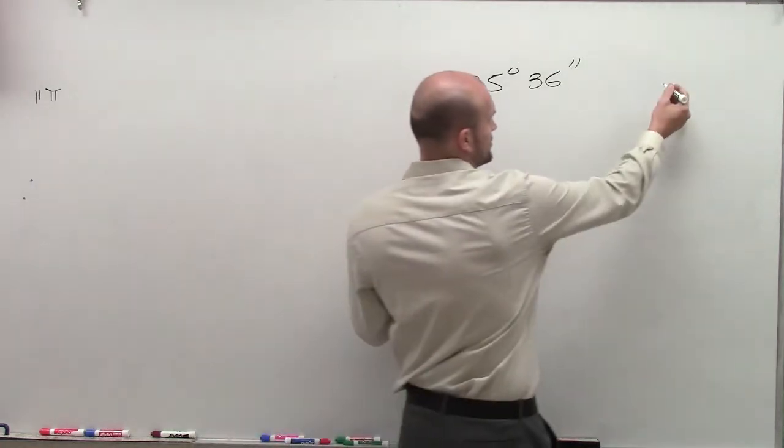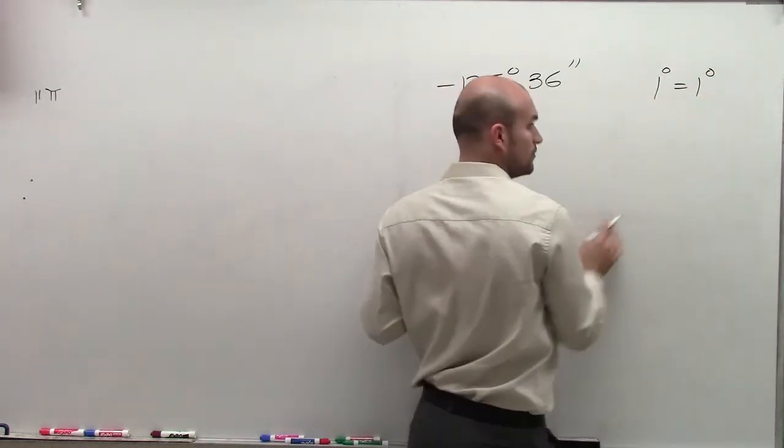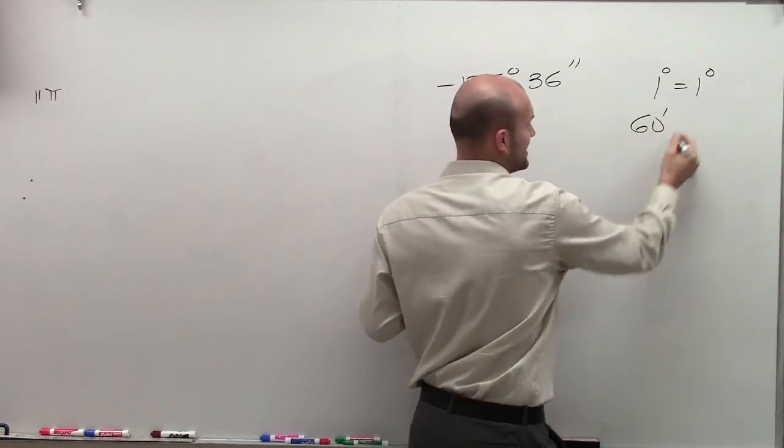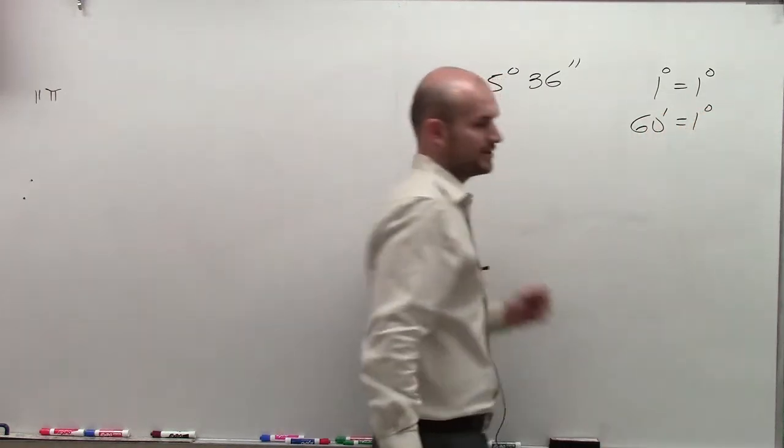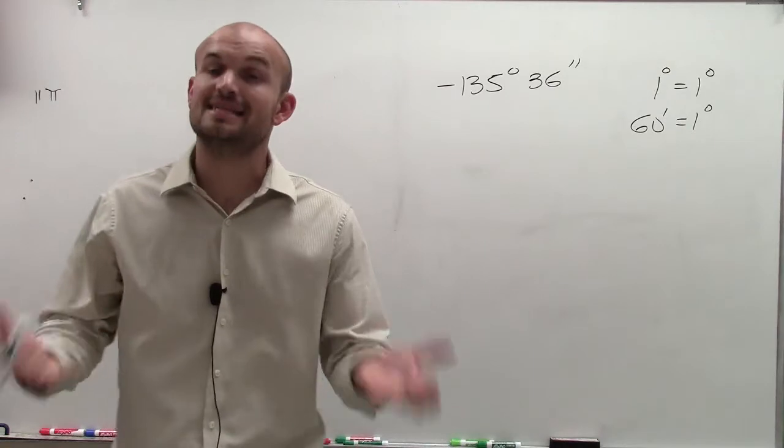So what I'm going to do is create a little table here. One degree obviously equals one degree. Sixty minutes equals one degree. So whenever you have 60 minutes of something, that equals a degree.